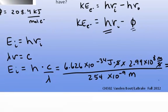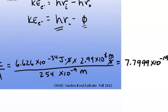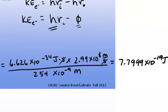Doing that calculation gives us 7.7999 × 10⁻¹⁹ joules. So we have our incident photon energy right here.